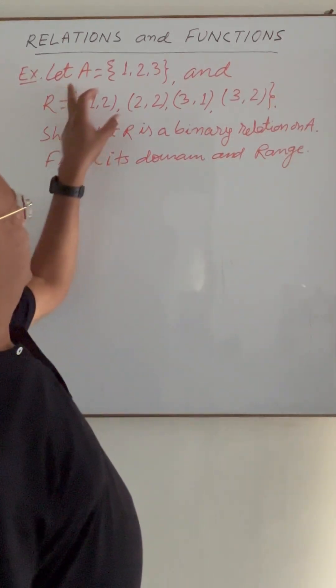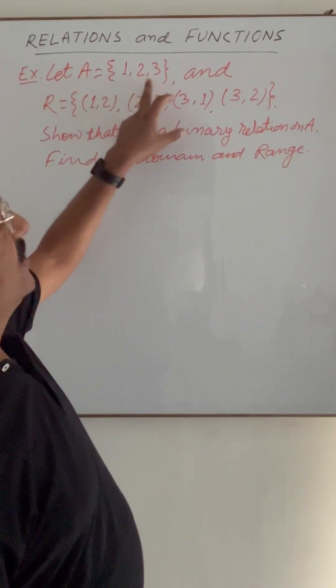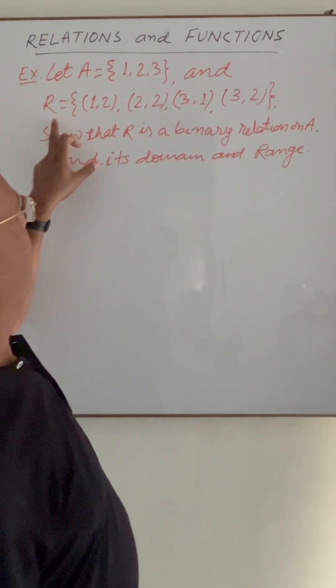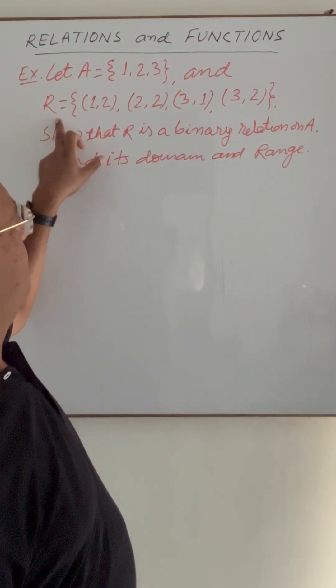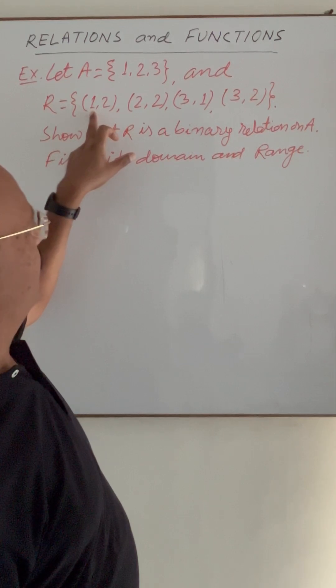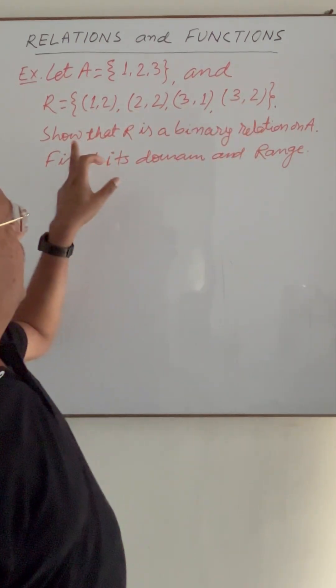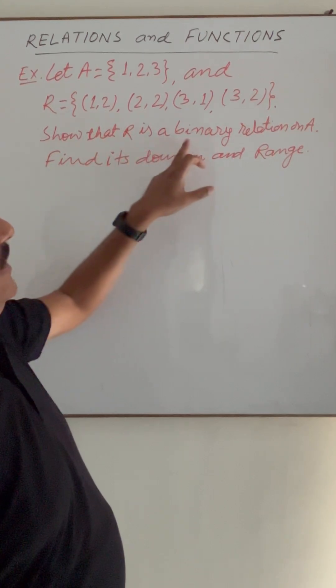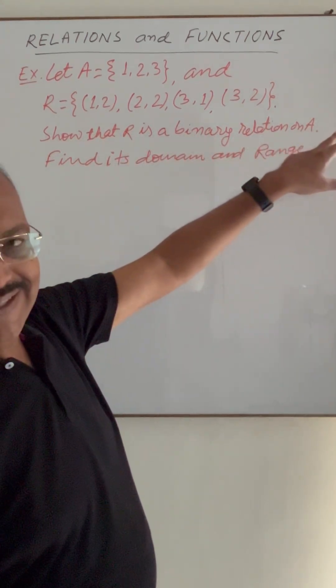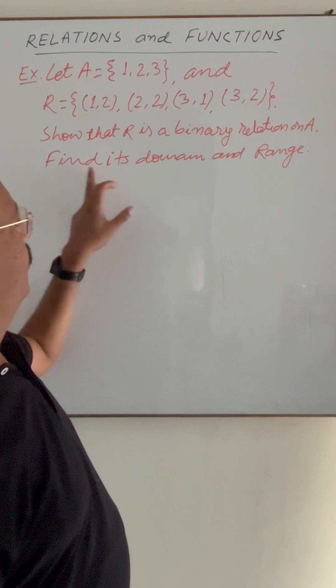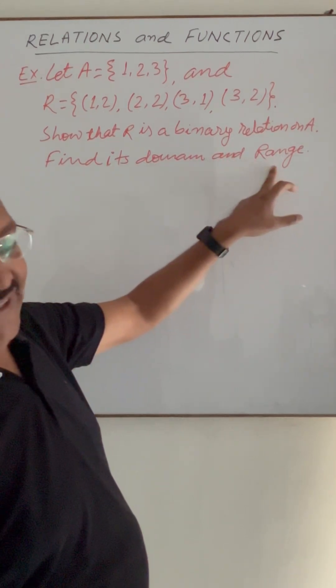Here question is, let A is a set having elements 1, 2, 3 and R is a set having elements as ordered pairs (1,2), (2,2), (3,1), (3,2). Then we have to show that R is a binary relation on set A and we have to find its domain and range.